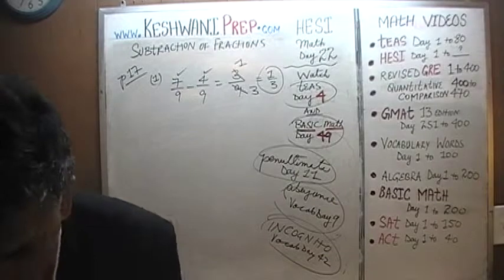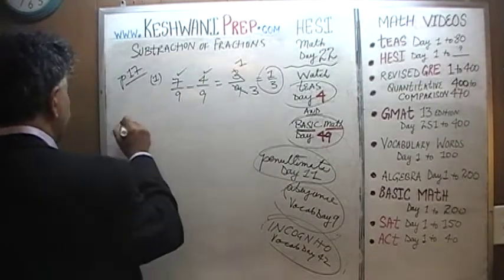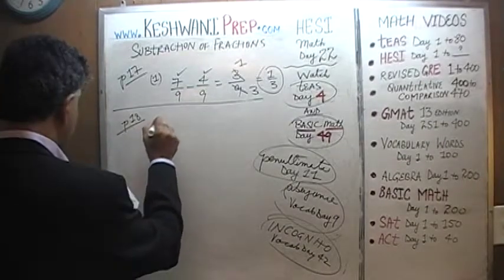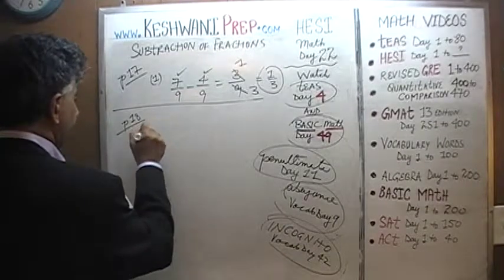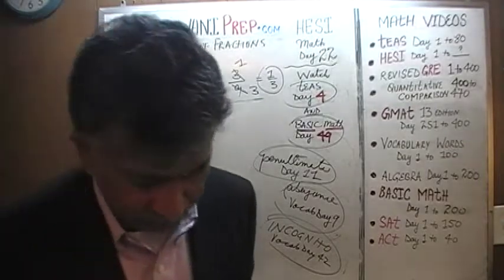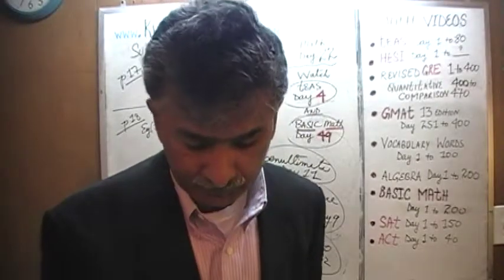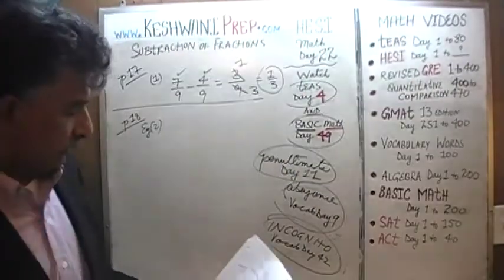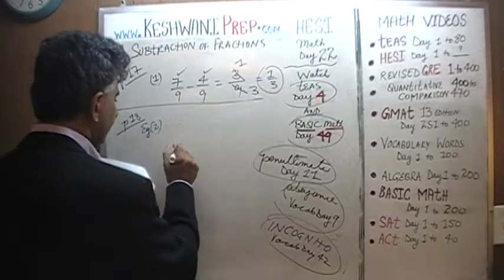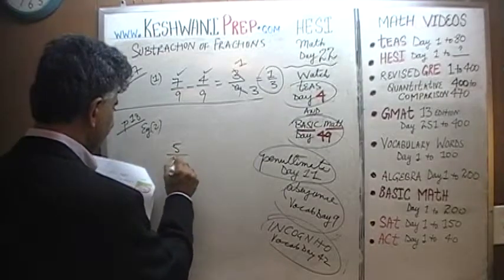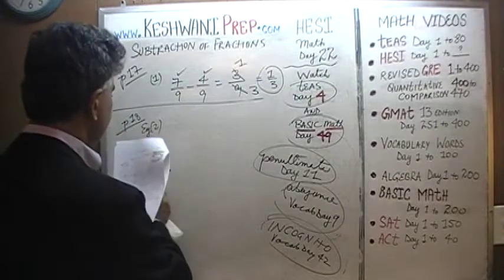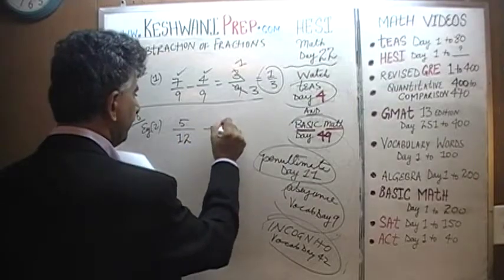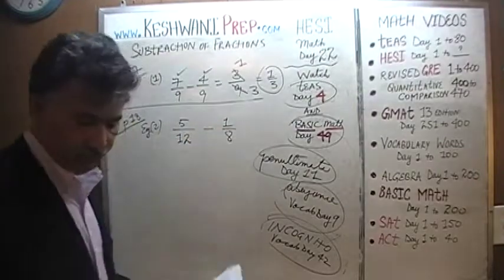Let's do one more. We are on page number 18 now. This is example number 2 — in the book they do not number these, but I'm numbering them 1, 2, and 3. There are 3 of them. The second one says 5 over 12 minus 1 eighth.